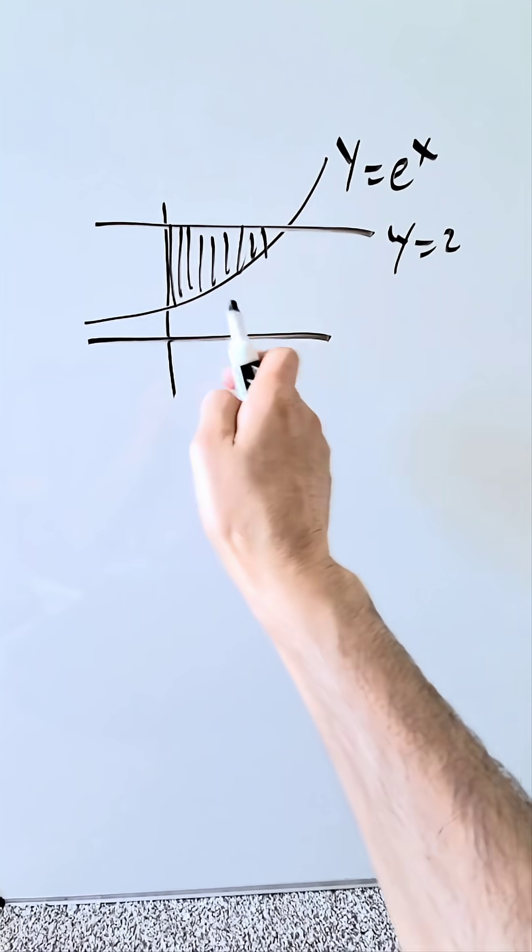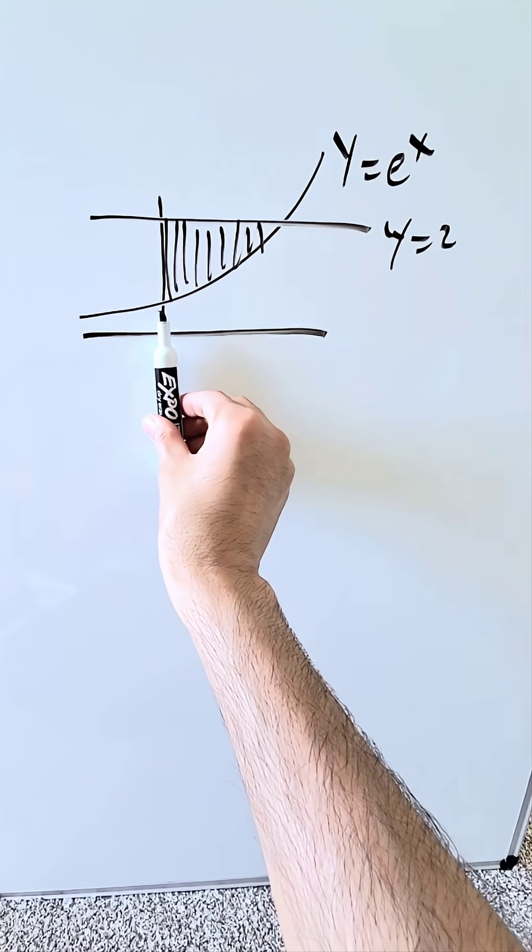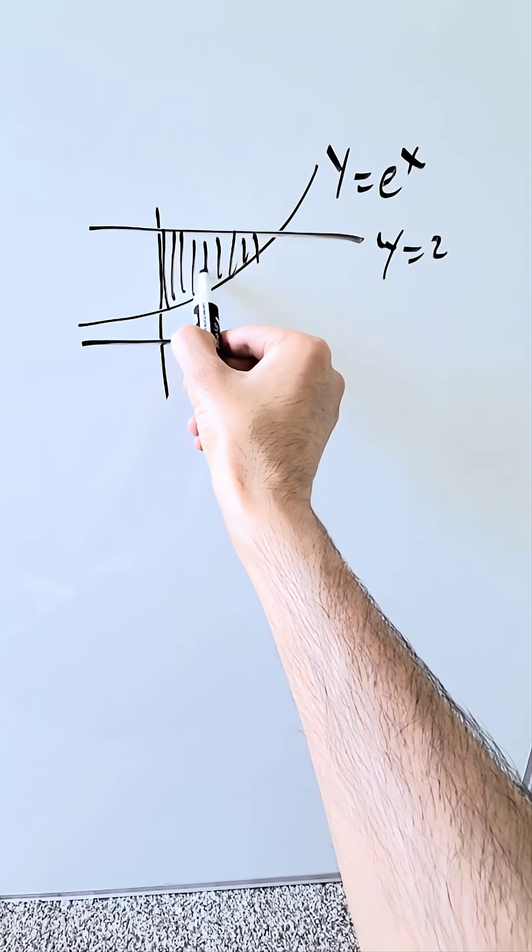We have here an exponential function and horizontal line y equals 2, your vertical y-axis which is x equals 0. What is this shaded region?